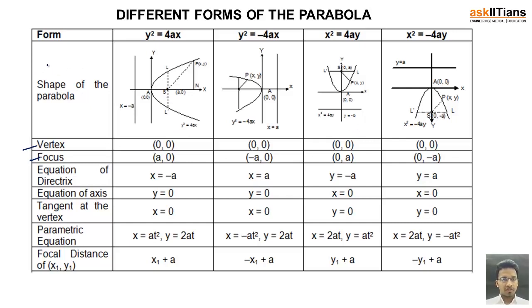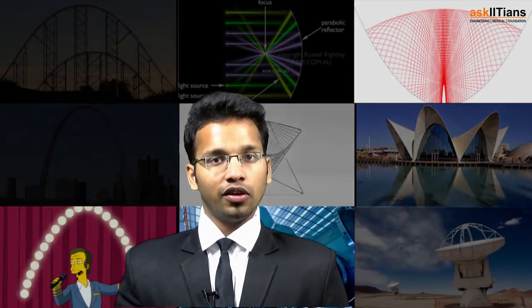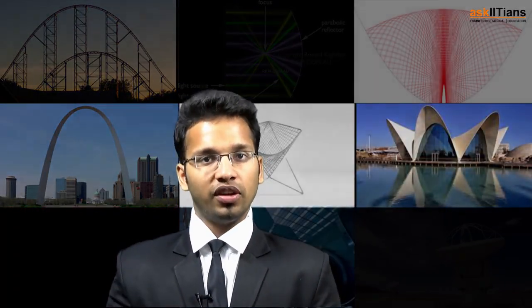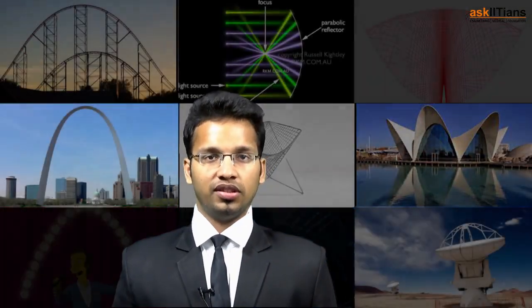These are all the simplest forms of parabolas — keep this as a reference and you can make it yourself to remember all the related terms. In this part we have seen the equation of parabola and the terms related to parabola. In the next part we are going to see the general equation of parabola and the parametric form of parabola, which is a very key concept for JEE Mains and Advanced. Stay tuned for the next part.